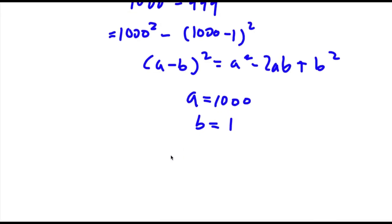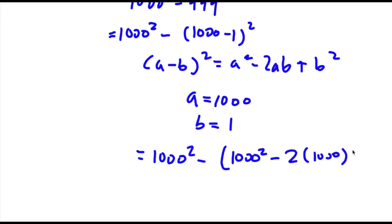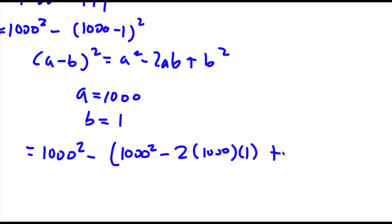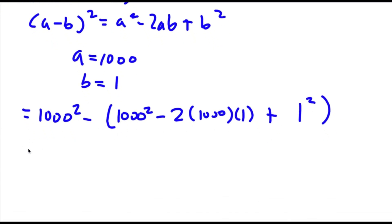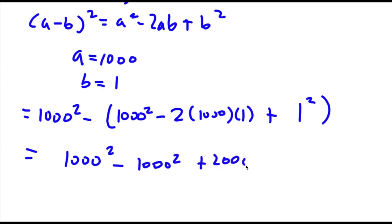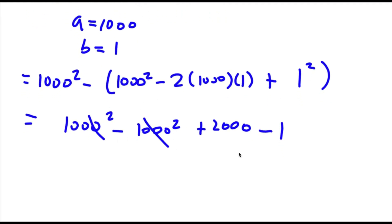So this is going to equal 1000 squared minus (1000 squared minus 2 times 1000 times 1 plus 1). And now this is equal to 1000 squared minus 1000 squared plus 2000 minus 1. Now the two 1000 squared terms cancel out, so all I'm left with is 2000 minus 1, which is equal to 1999.